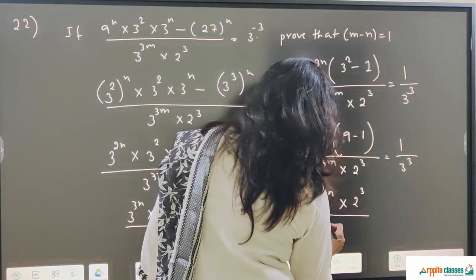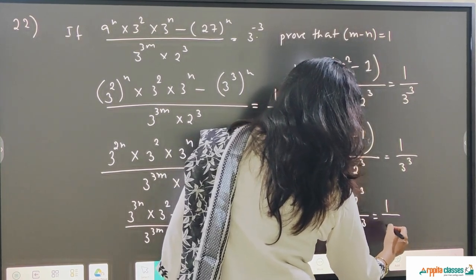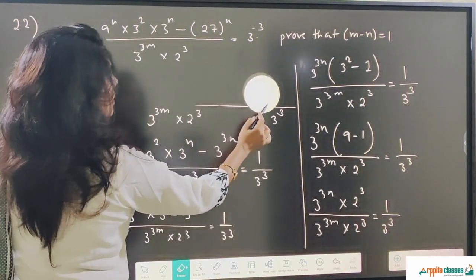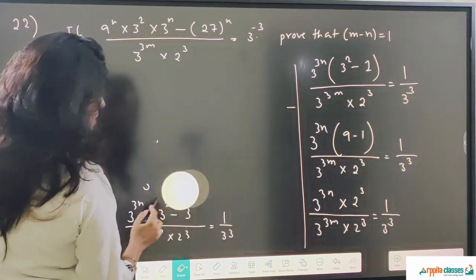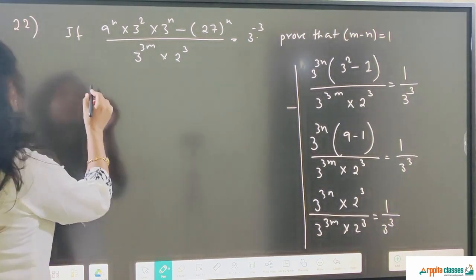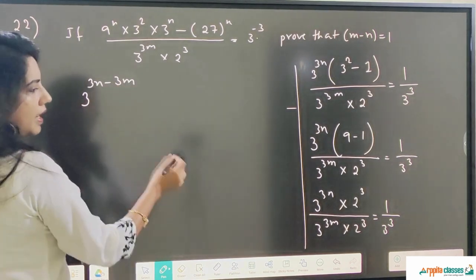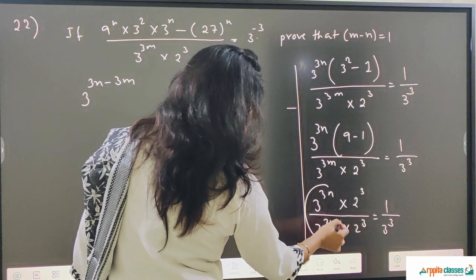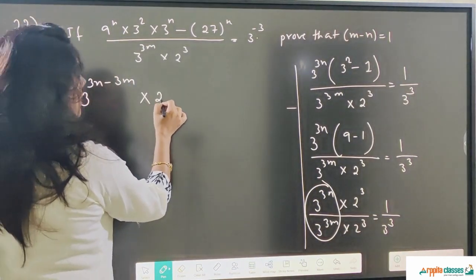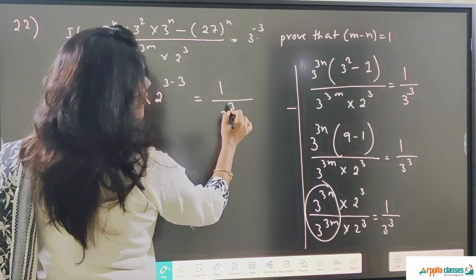So we can write 3 to the power 3n into 8, and that 8 can be written as 2 cubed — because in the denominator we have 2 cubed, so I wrote it this way — equals 1 upon 3 to the power 3. So now this is 3 to the power 3n minus 3m; bases are same so powers can be subtracted. Into 2 to the power 3 minus 3, equals 1 upon 3 to the power 3.